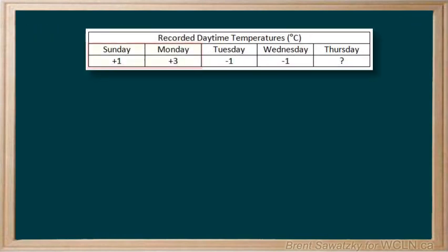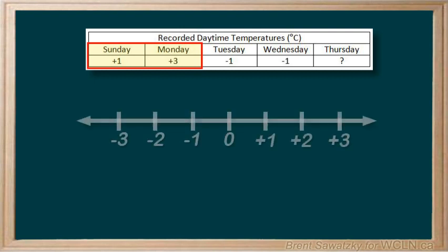From Sunday to Monday we see a change from plus one to plus three. We can look at this on a number line. The temperature started at plus one degree here and went to plus three degrees. A one, two degree increase, and so the change is a plus two degree change. The temperature went up two degrees.